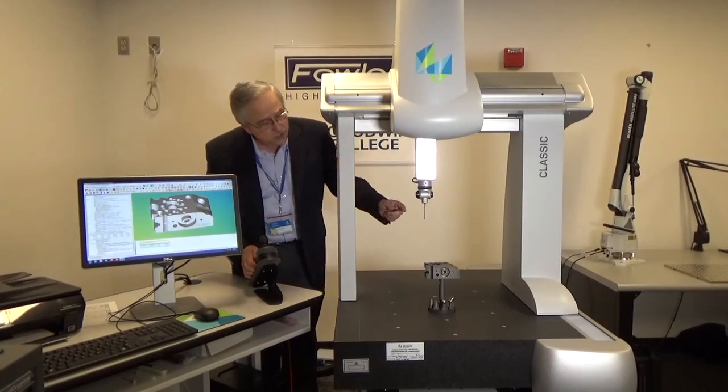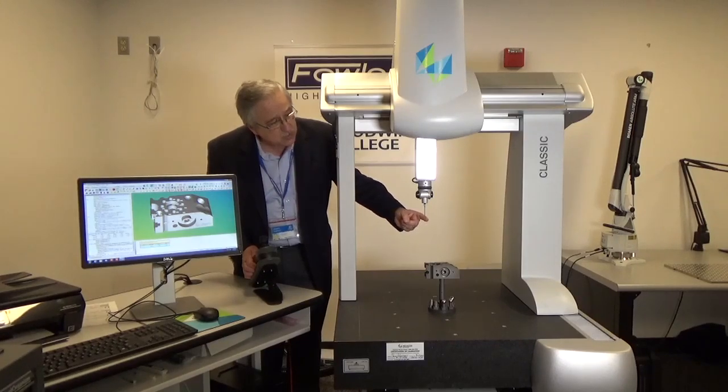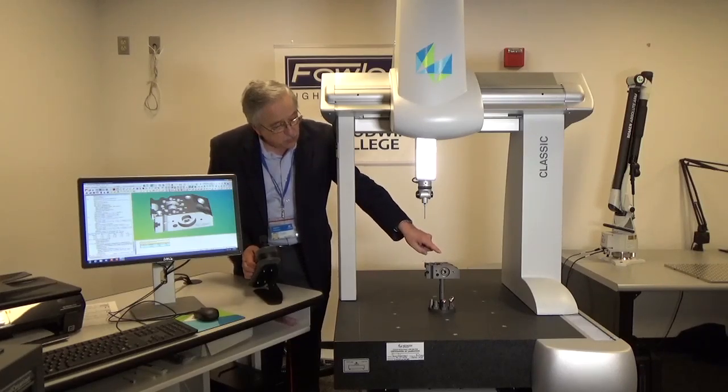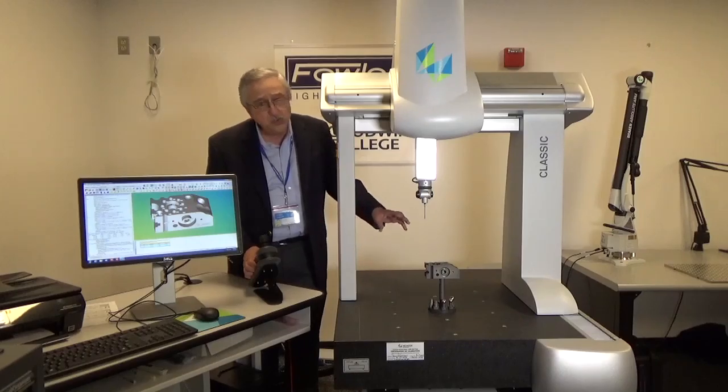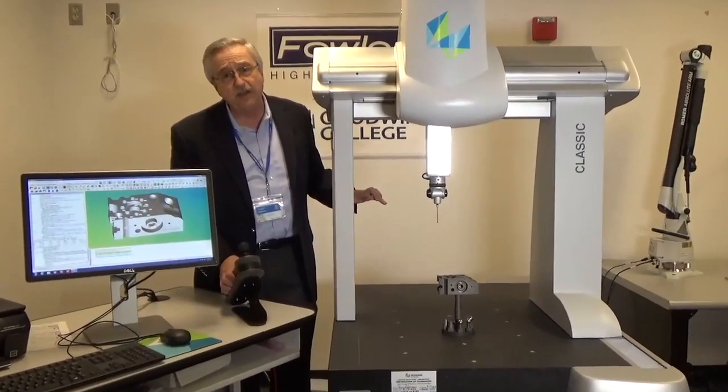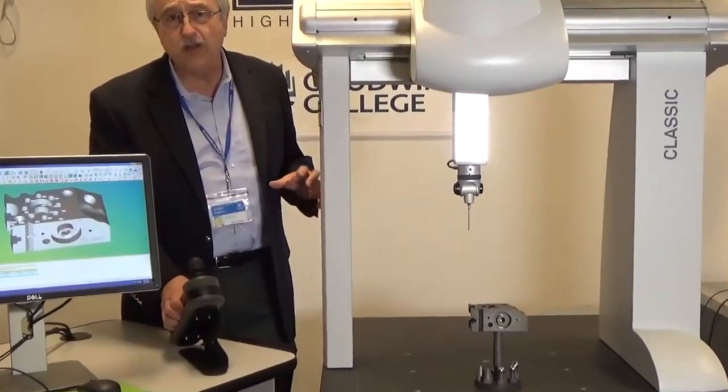What you're looking at here is a probe. It has a sapphire tip as the other ROMER arm did. You bring this down, and it touches off on various points on the part. Once that information is obtained, you can use that data to make comparisons with the print or the CAD drawing to determine whether or not you're in specification.